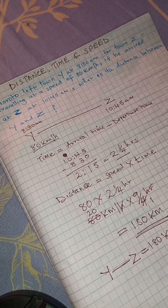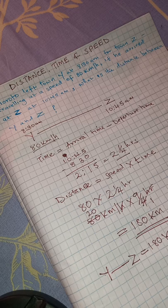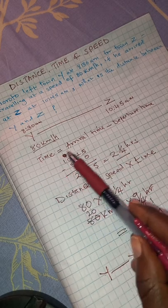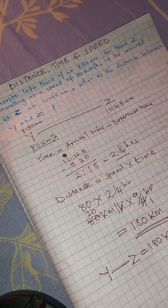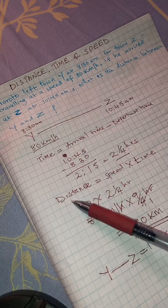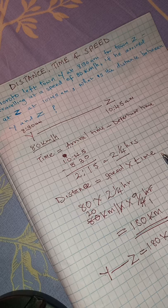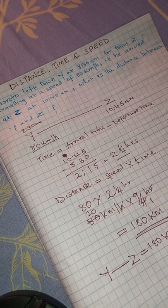That is how we tackle that question. You just need to know the formulas. How to calculate time by subtracting departure time from arrival time. How to calculate distance. Distance is speed times time. And you just need to understand the question and translate it into mathematical operations.